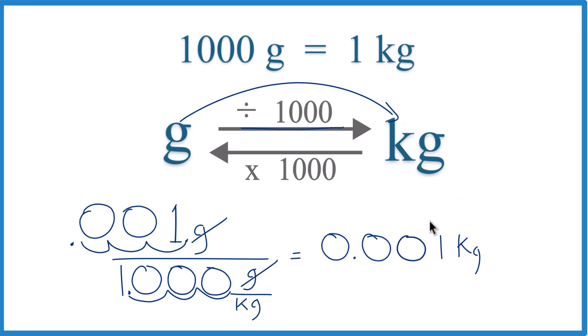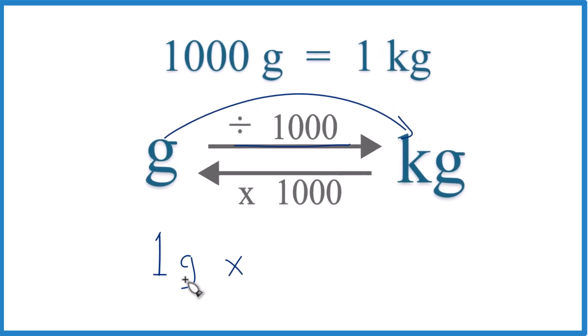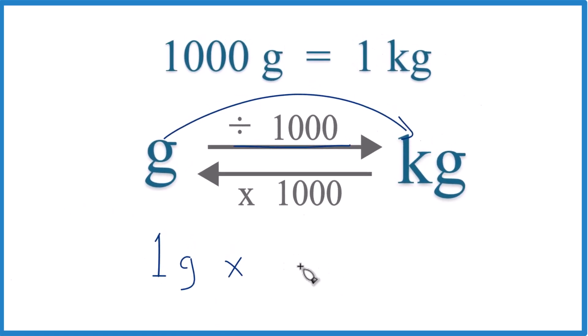Some teachers might want you to multiply by a conversion factor. It's the same process, but let's give it a try. So we take our 1 gram, and we're going to multiply that by a conversion factor, and we want grams on the bottom so they cancel out. So we could use this conversion factor here. 1 kilogram is 1,000 grams,